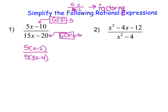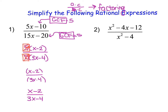Now because I have a multiplication problem taking place with a common value of 5 in both the numerator and denominator, we're able to cancel them out. We are simply left with x minus 2 over 3x minus 4. Since there's no longer any multiplication taking place, we write x minus 2 over 3x minus 4 as the simplified rational expression.